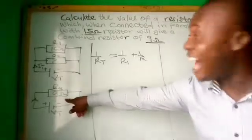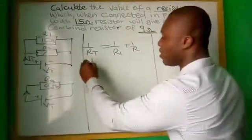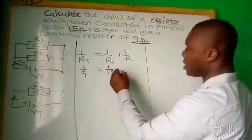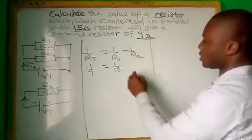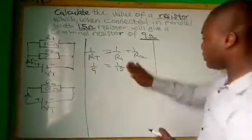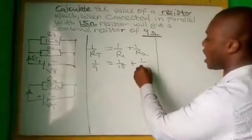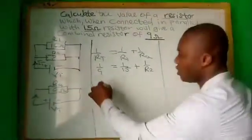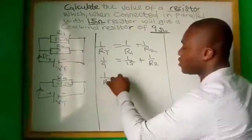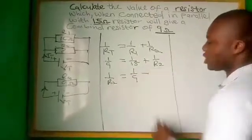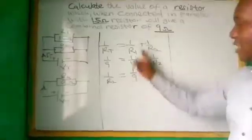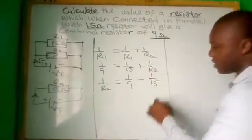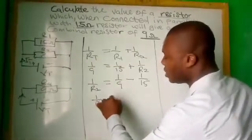Our RT is what? 9, that is the combined resistor is 9. So 1/9 is equal to 1/15 plus 1/R2. We don't know R2, so what we do is bring the 1/R2 to the other side because that is what we are looking for. So 1/R2 is equal to 1/9 minus 1/15.